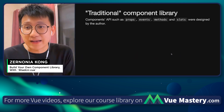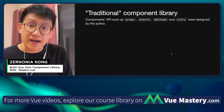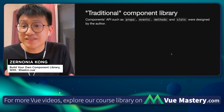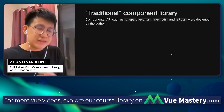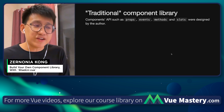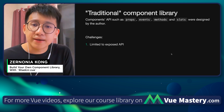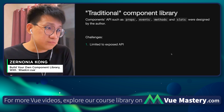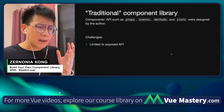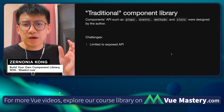First of all, what is a traditional component library? Essentially I describe it as a component library where the components' API — such as props, events, and slots — were designed by the author or the team itself. All of us have used some component library before, and we always come across a few challenges. First of all, we are always limited to the exposed API — be it a thousand props or events, we are always somehow limited. We always think, I just wish I could modify just something about that component.